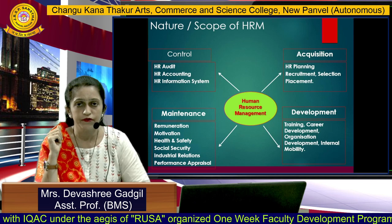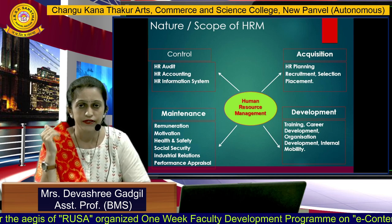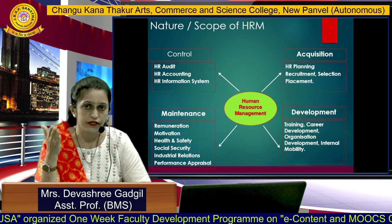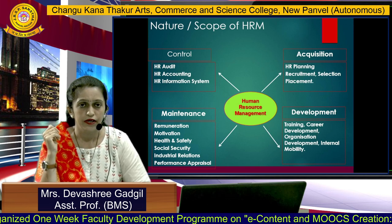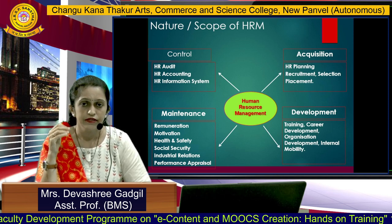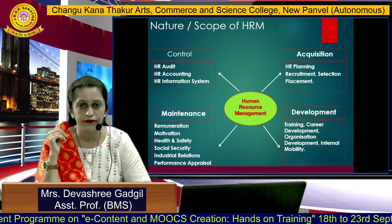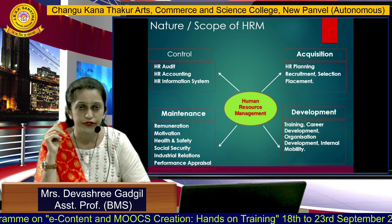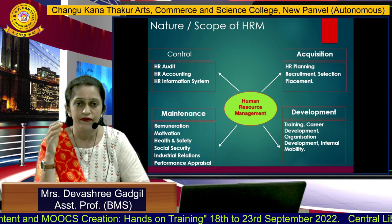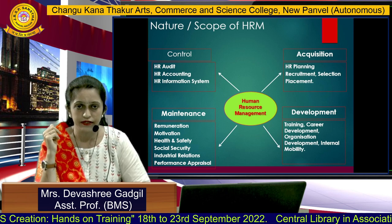The nature and scope of HRM has four perspectives: control, acquisition, maintenance, and development. Under control: HR audit, HR accounting, and HR information system. Under acquisition: HR planning, recruitment, selection, and placement. Under maintenance: remuneration, motivation, health and safety, social security, industrial relations, and performance results. Under development: training, career development, organizational development, and internal mobility.